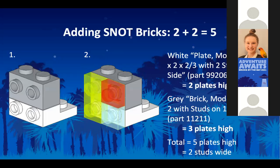One of the cool things about some of these newer SNOT bricks is you can combine them together to make a taller SNOT panel. By putting a one-by-two brick with studs on the side on top of the two-by-two plate with studs on the side, you get a construction that's five plates high, and therefore anything attached to those studs will line up. This gives a little extra stability in a SNOT construction.